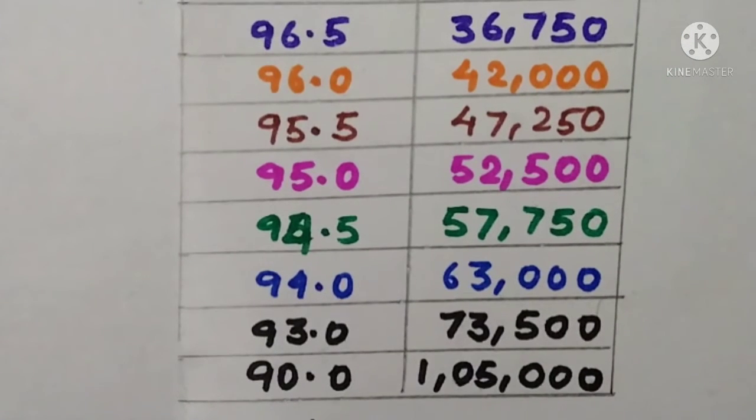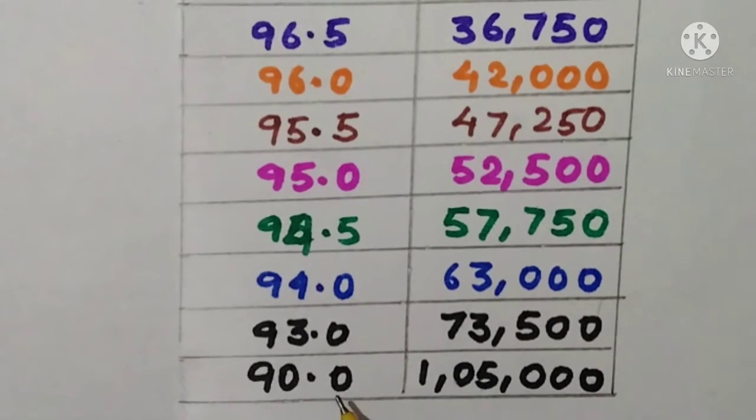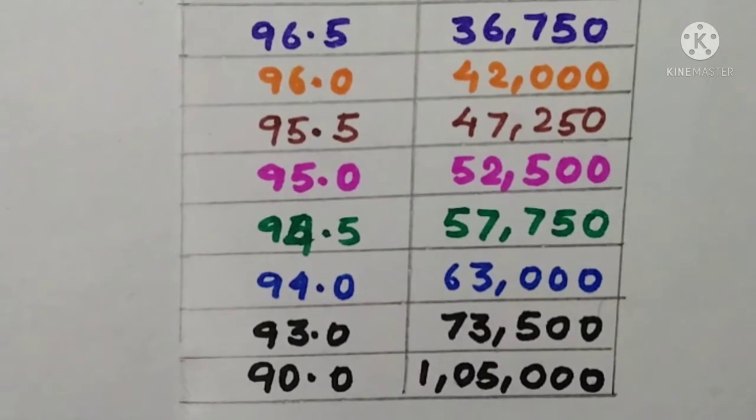Now if we directly go to 90 percentile then that is 1 lakh 5,000. Yes, this is the reality that is the cutoff for the general category to get eligible for JEE Advanced is 90 percentile. And if you get 90 percentile then your rank will be 1 lakh 5,000. This means that you are eligible for the JEE Advanced examinations.